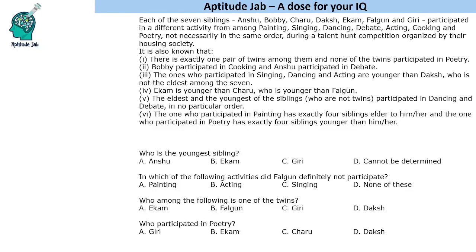Hello everyone, welcome to Aptitude Jab. This set says that there are seven siblings A to G who participated in different activities. It is given that there is exactly one pair of twins among them and none of the twins participated in poetry. We will find out, for example, which activity the youngest sibling Fagun participated in, and which of the following is a pair of twins.